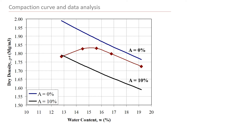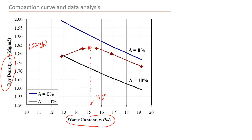We plot water content versus dry density for all 10 results. You can do this by hand or using Excel. We need to find the peak of the curve, which gives us the maximum dry density of approximately 1.83 megagrams per cubic meter, and the optimum water content of approximately 15.2%. These are the two major parameters obtained from this test: maximum dry density and optimum water content.